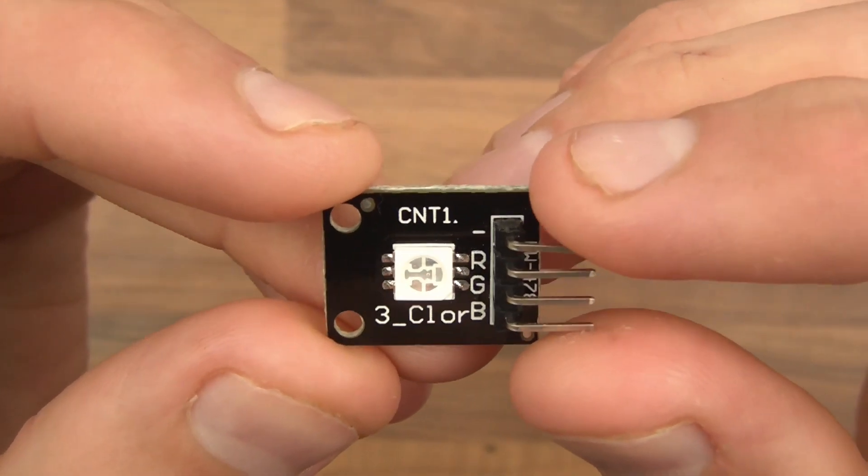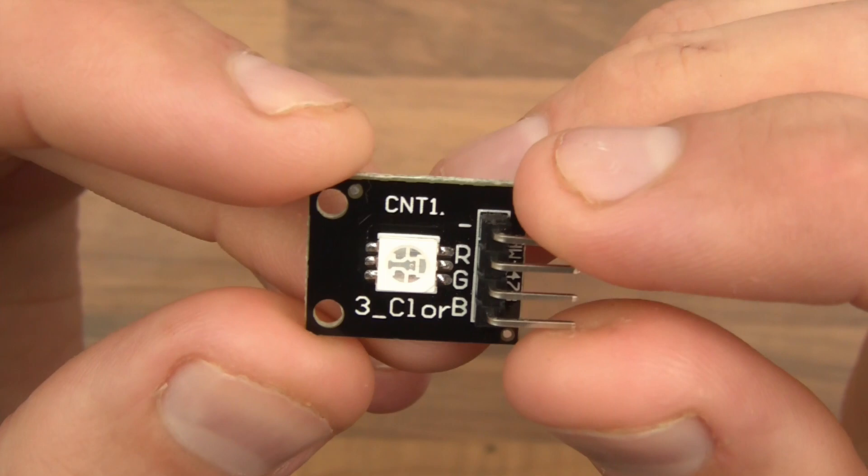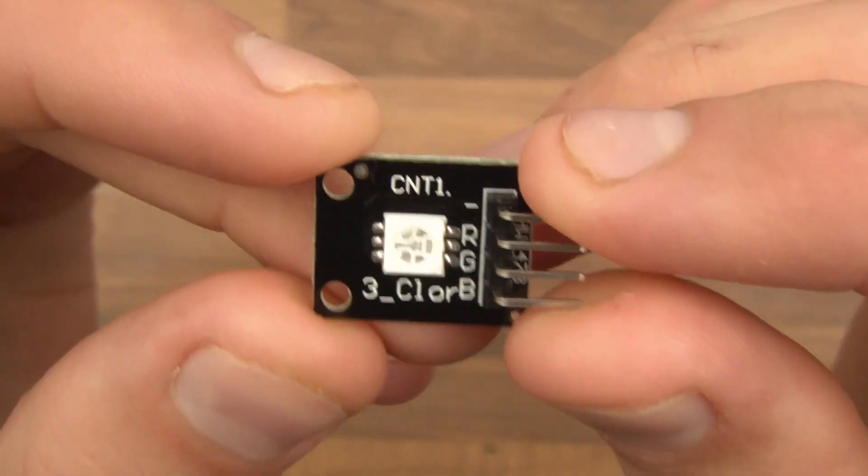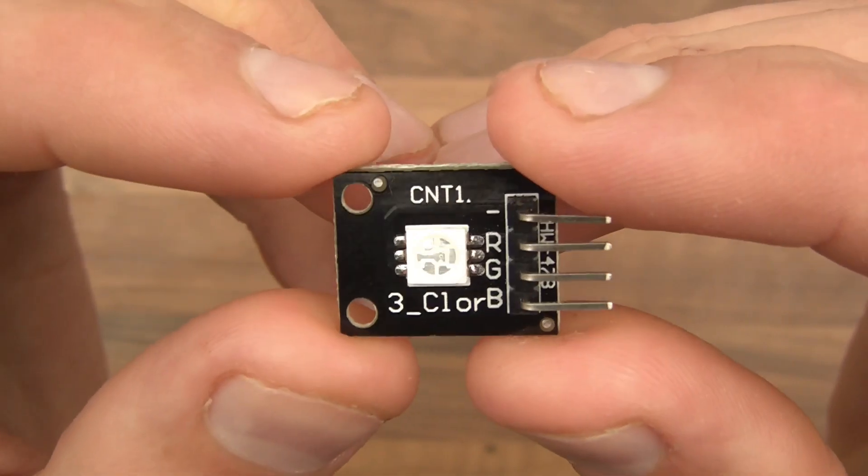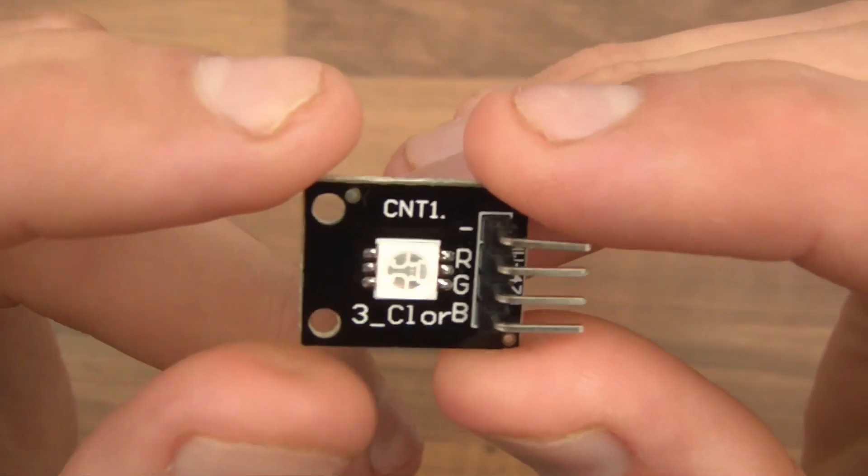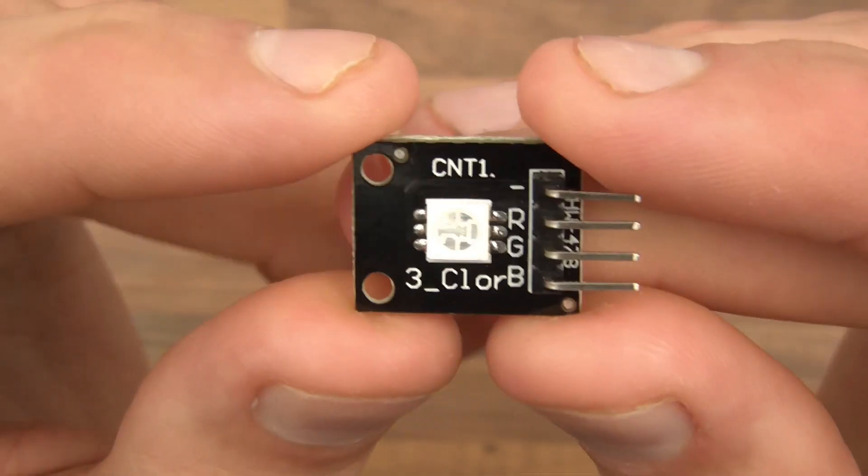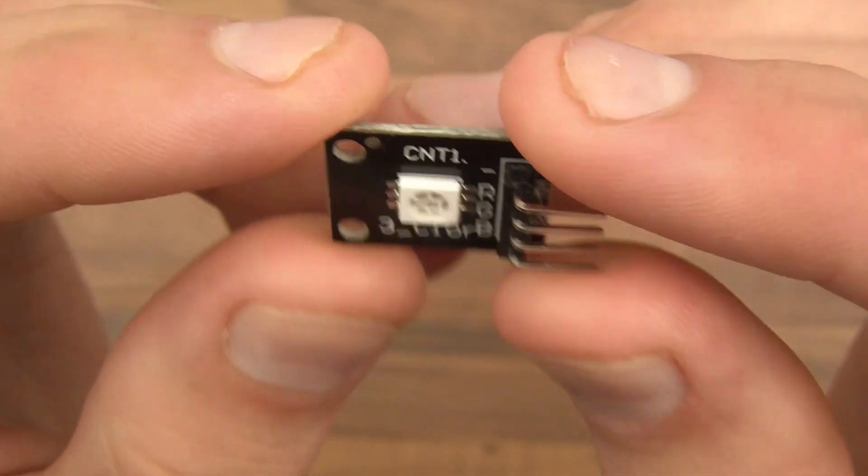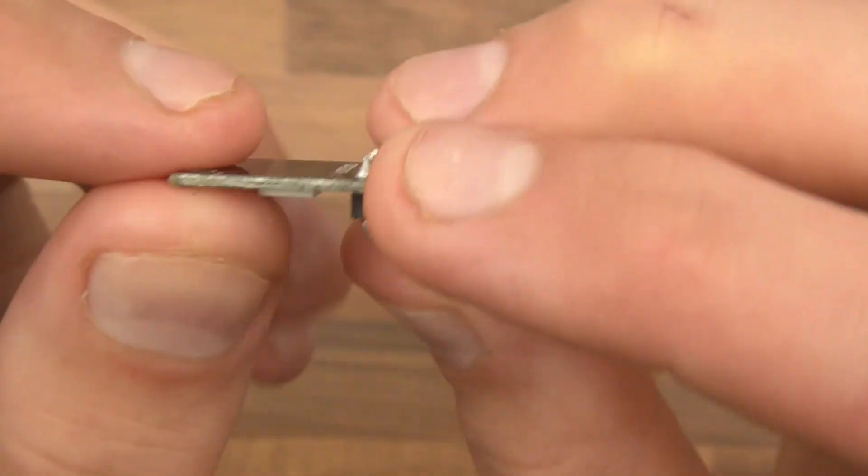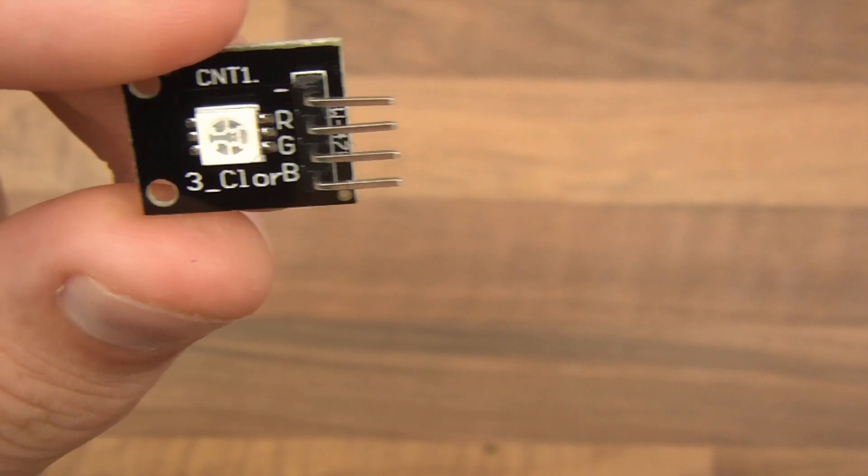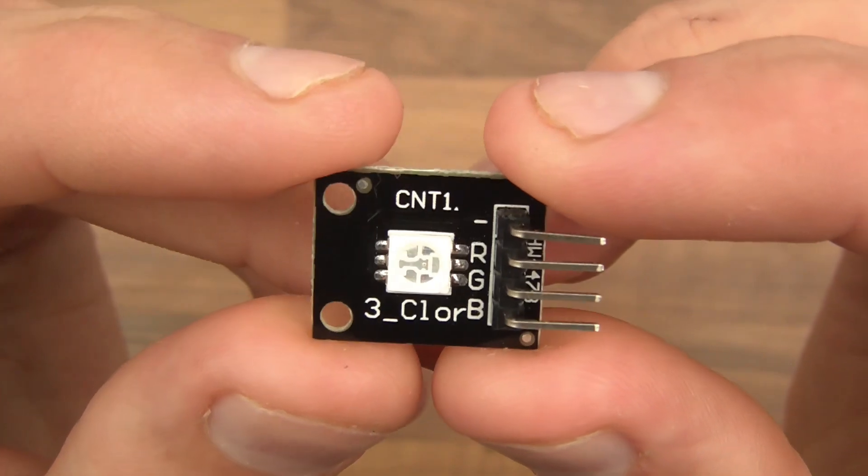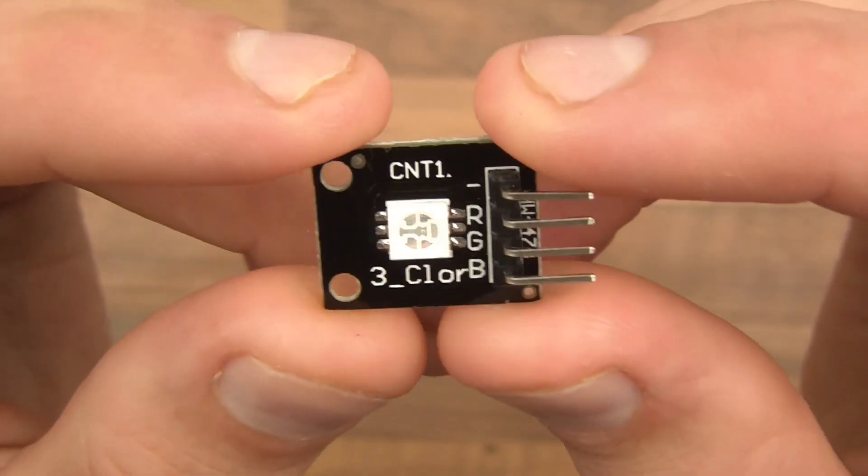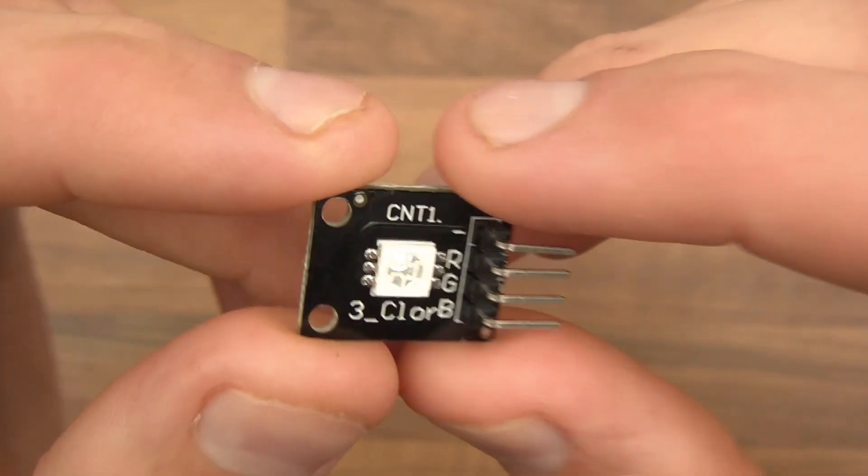Alright so this is a very simple module really and it's very common because it's so easy to use. This particular one has got three LEDs built into one little pack, RGB, it means red, green and blue. And of course this is an LED and you power it with a certain amount of voltage and basically it causes the thing to glow, it emits light. So first thing I'm going to do is show you how the thing works.